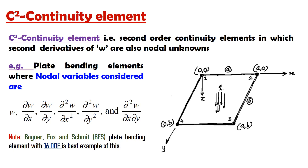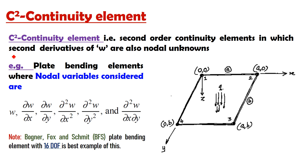The first is the second order continuity element, which is called as the C2 continuity element. Elements in which second order derivatives of W are considered as nodal unknowns are called second order continuity elements, that is C2 continuity elements. So in these plate bending elements, second order derivatives of W are also considered in the nodal unknowns.